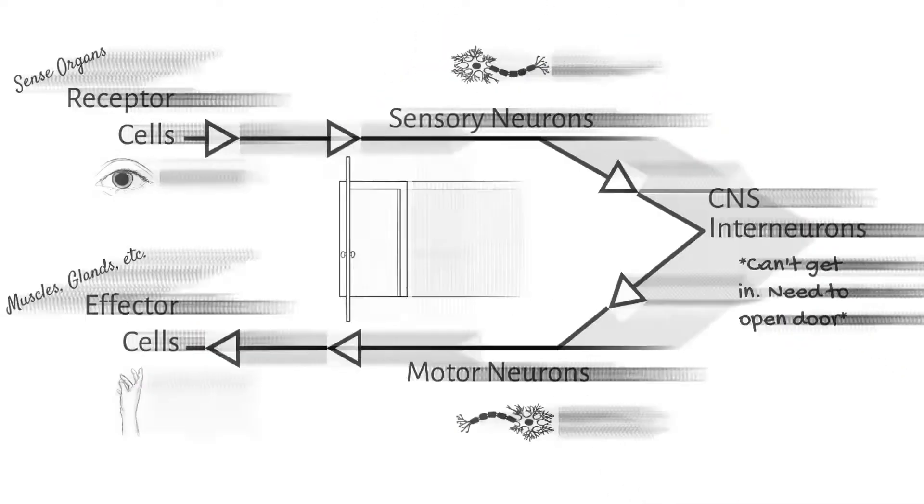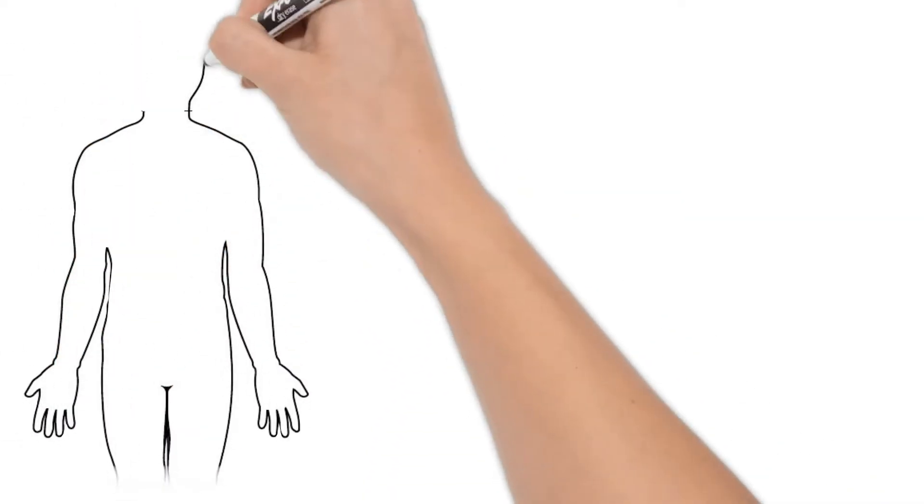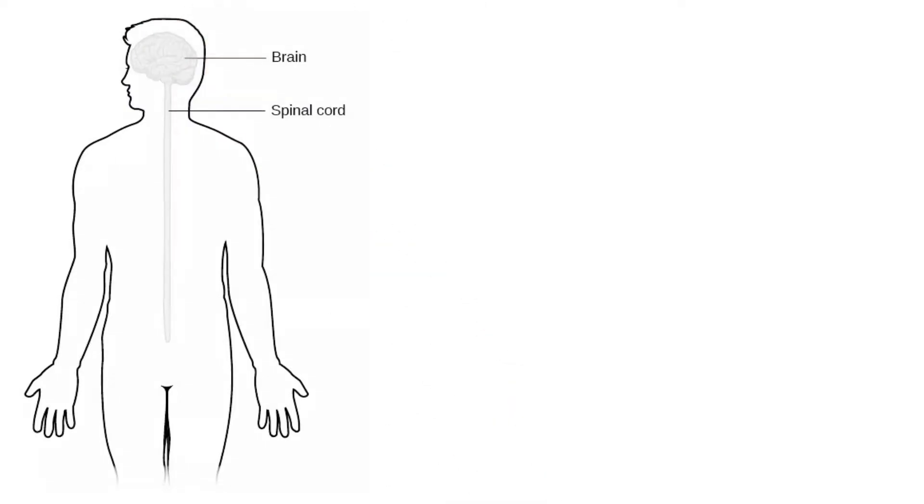Now I've been grouping the central nervous system all together, but some information goes to the brain and some first goes to the spinal cord.